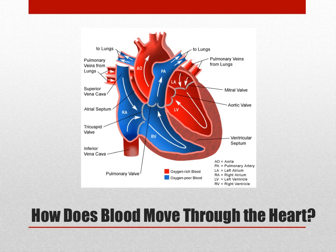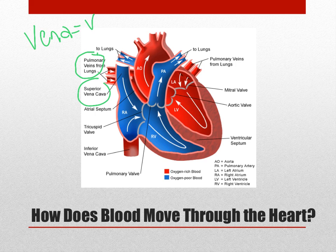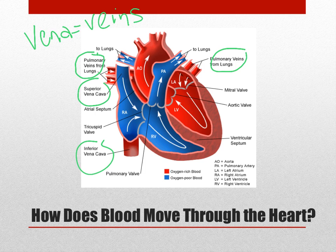Looking at the heart cut in half from the front, we can trace how blood flows through it. Veins and vena cava carry blood coming back from either the body or the lungs. Pulmonary veins bring blood from the lungs, and the vena cava bring blood back from the body. Blood enters the heart on both the right and left sides.